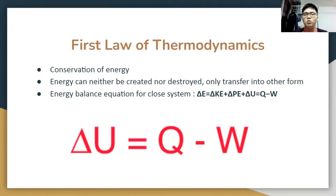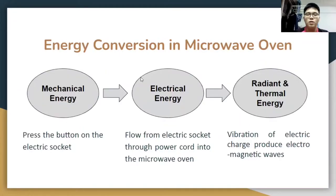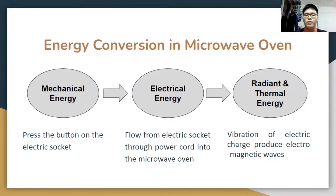Energy cannot be created or destroyed, only converted. There are three stages of energy conversion in a microwave oven: from mechanical energy, to electrical energy, and finally to radiant and thermal energy. Mechanical energy is involved when you press the button on the socket to turn on the microwave oven. It then converts to electrical energy as current flows from the socket through the power cord into the microwave oven. As my teammate Iman mentioned, the microwave has a magnetron to produce microwaves. The vibration of electric charges makes the magnetron function, producing electromagnetic waves that carry radiant energy and convert it to thermal energy to cook the food.